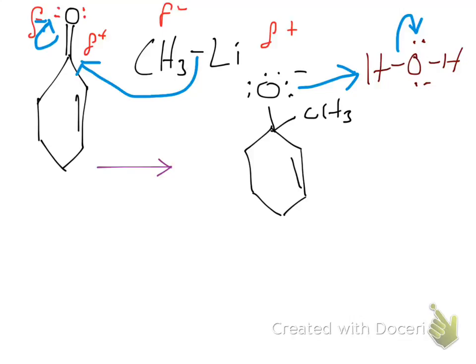breaking this off, giving us an OH group with a negative charge, and yielding a final product. Let's write this down. We will have our six-membered cyclic ring.